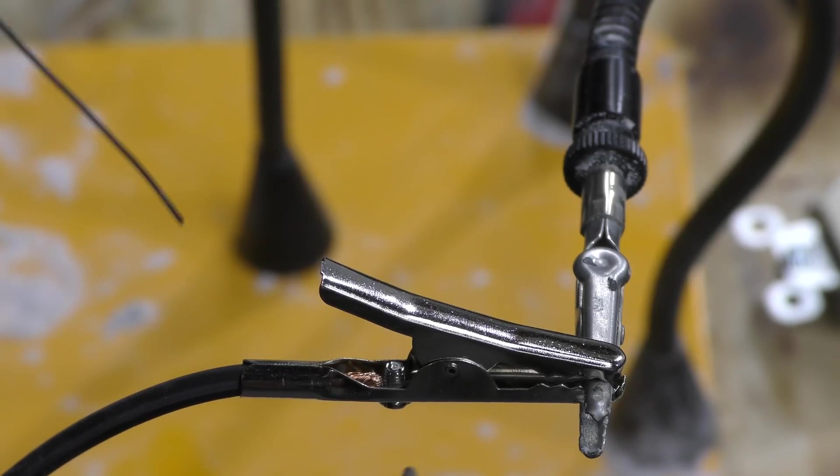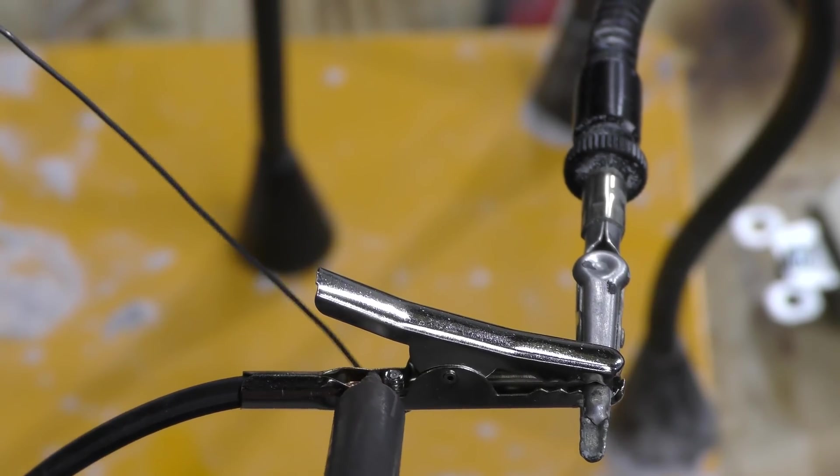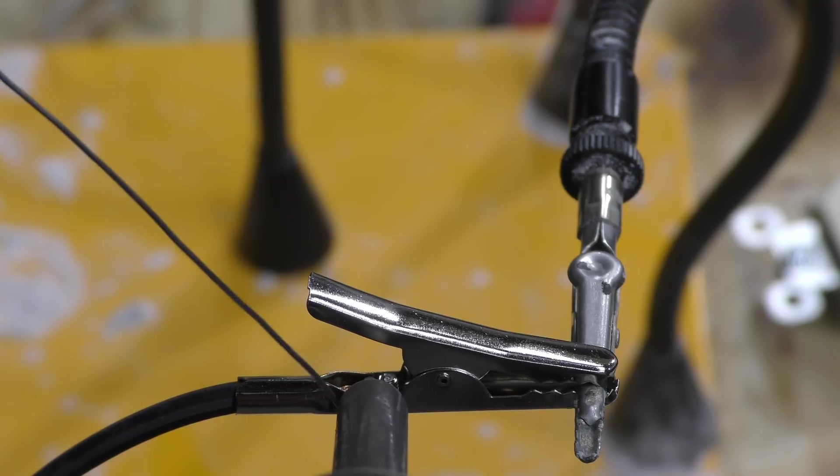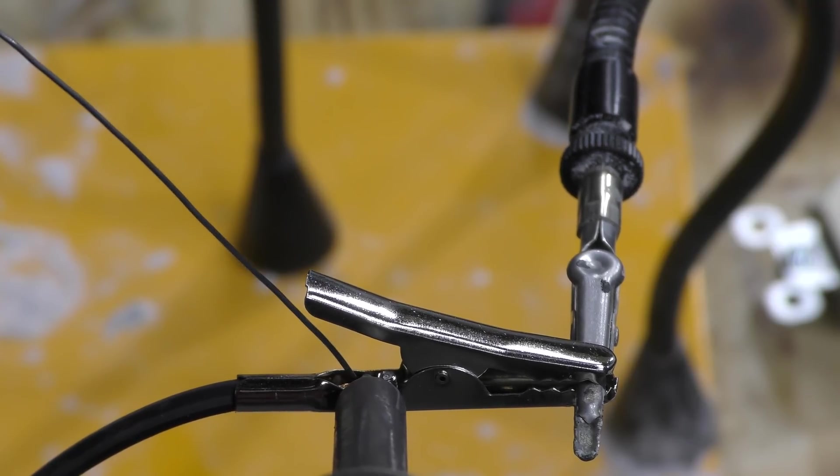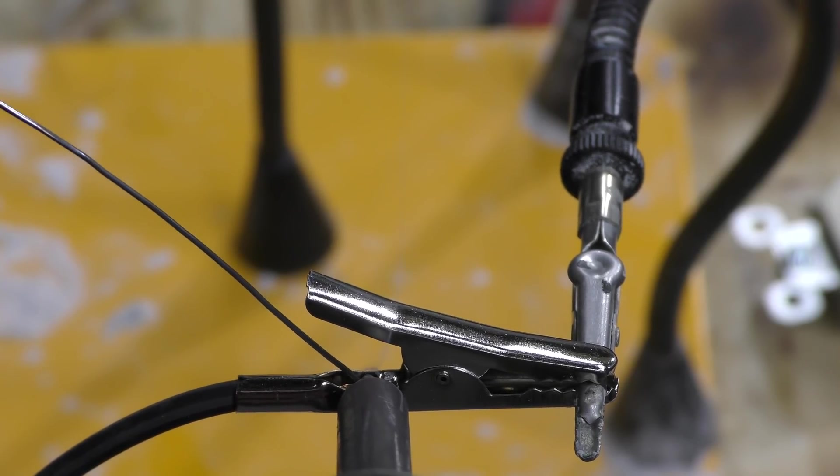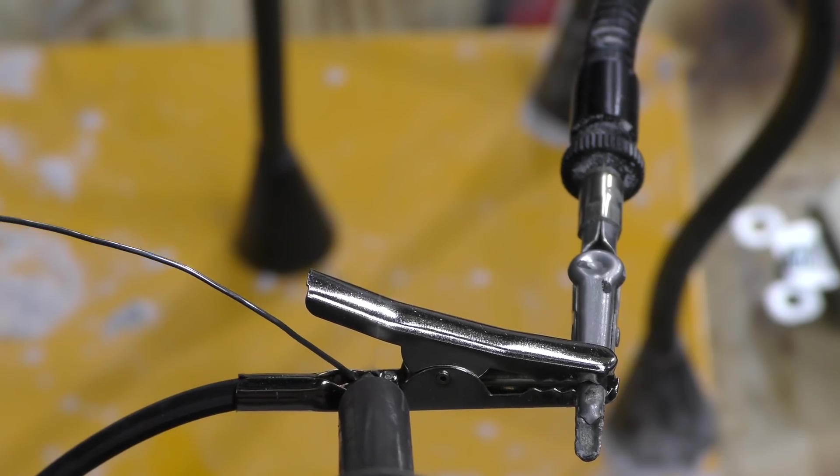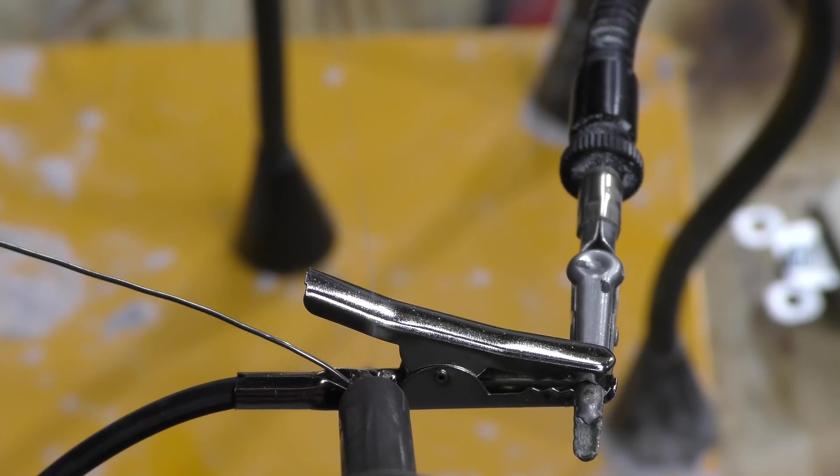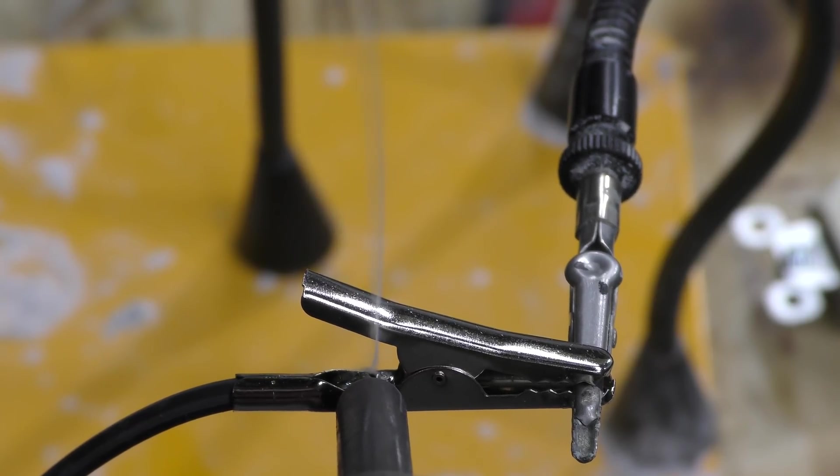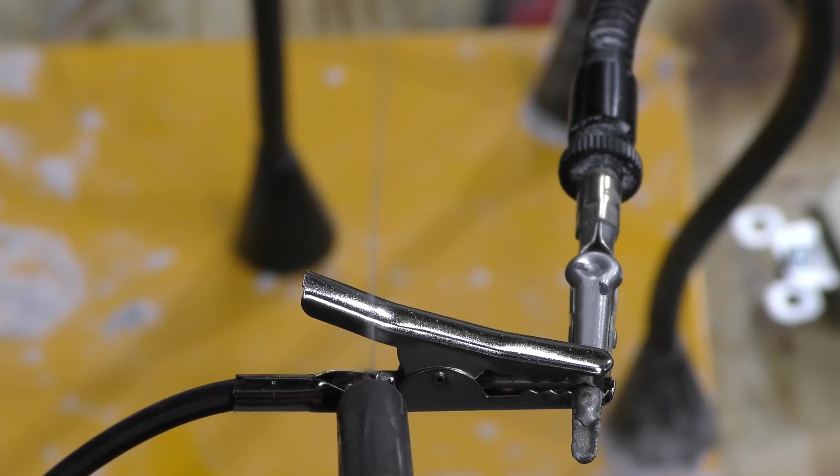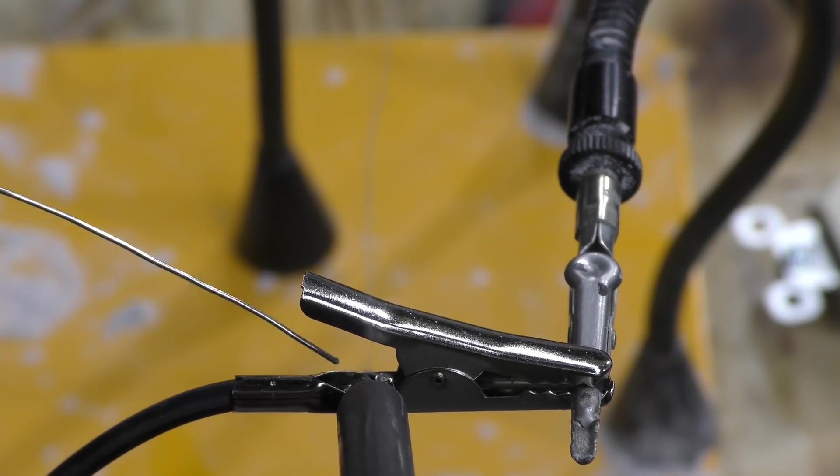Alright, so now you just heat up that clip and you have to heat the clip and the wire. And I found the best way to do that is pour a crap ton of solder. That will heat up both the wire and the tin.